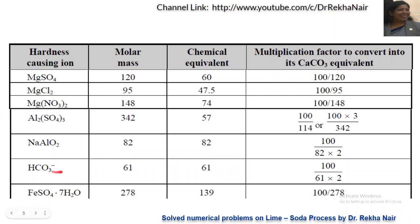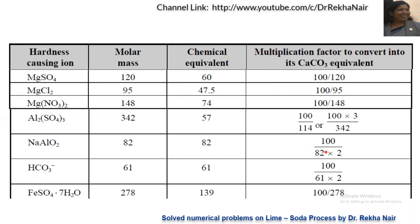Similarly, for HCO₃⁻: molecular mass = 61, valency = 1, so equivalent weight = 61. Multiplication factor = 50/61, or 100/(61×2). As a general rule, compounds with valency 1 have a multiplication factor of 100 ÷ (molecular weight × 2). You can remember it directly as 100 divided by (molecular weight × 2).